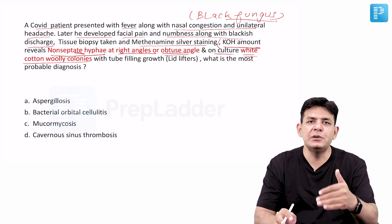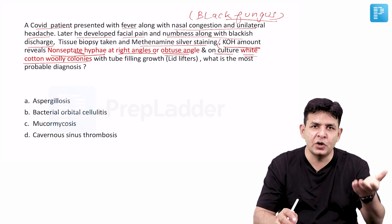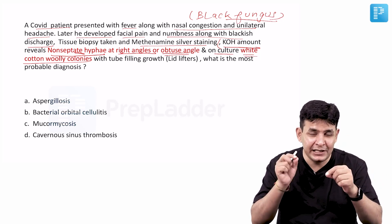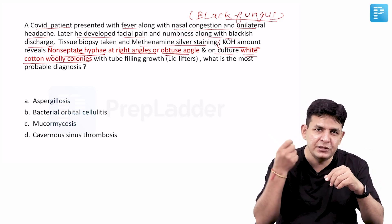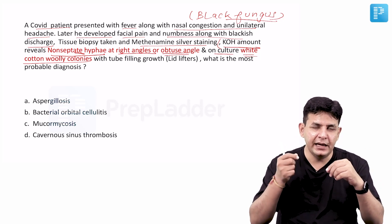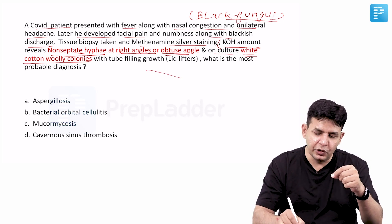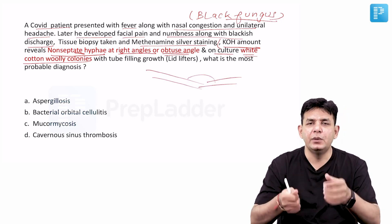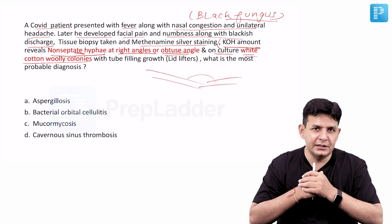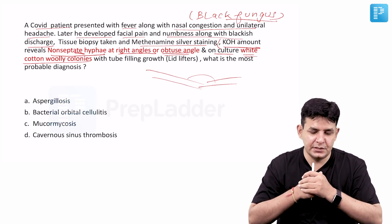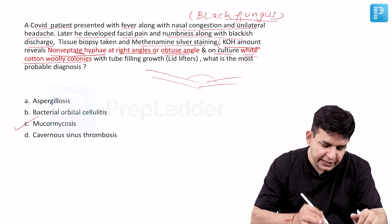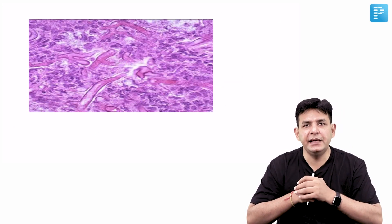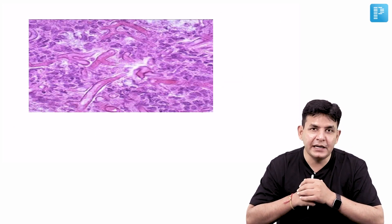Rhinocerebral mucormycosis is the most common form here, in which a blackish discharge or blackish crust is produced. Biopsy is taken and H&E staining is done. You observe aseptate hyphae at 120-degree or right angles — typical of mucormycosis. So the answer to our question is mucormycosis. This is the picture you can observe: aseptate hyphae at obtuse or right angles.